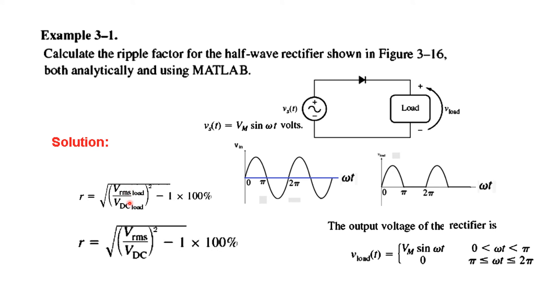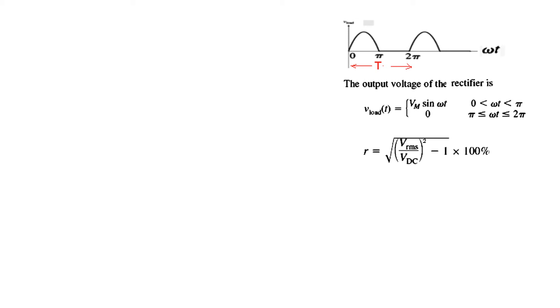And now, the formula. We had earlier written Vrms load. This can also be written as simply Vrms. Similarly, Vdc load can be written as Vdc. Other remains same. So these are the parameters we had already discussed. Now, what we need to do is we need to find Vrms and Vdc. First of all, Vdc. For Vdc, this is the formula that we had discussed.